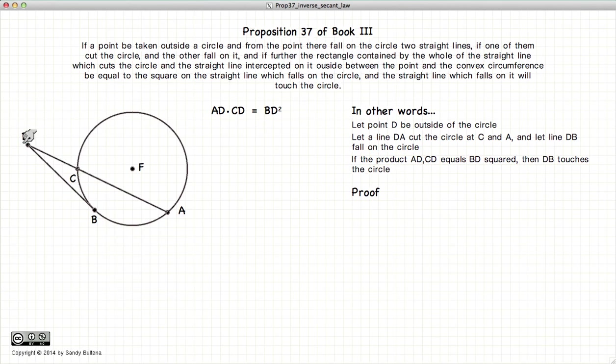So to prove this, the first thing we're going to do is draw a line from D to E where DE touches the circle, and we will use the methods described in Proposition 17 of Book 3. So now DE touches the circle.